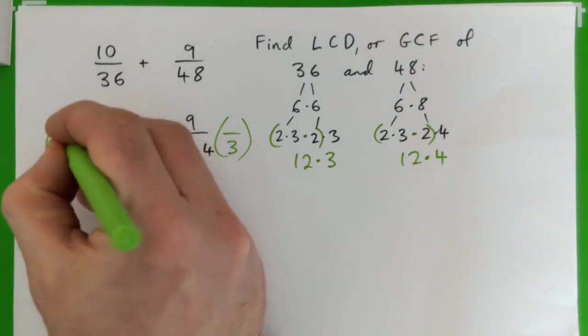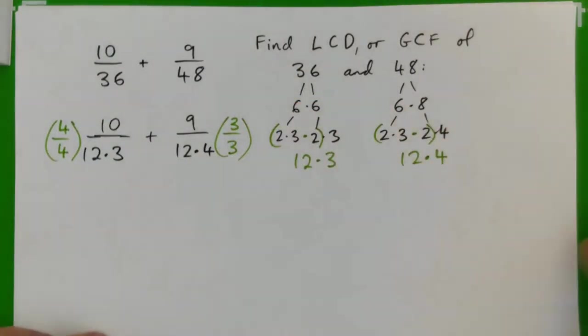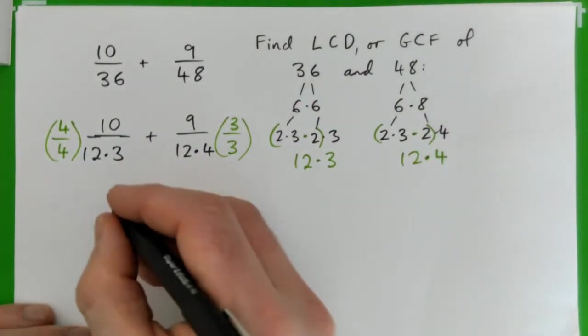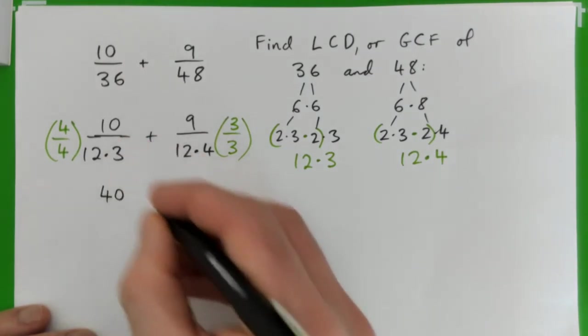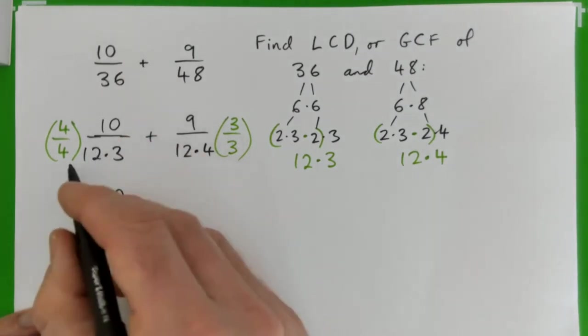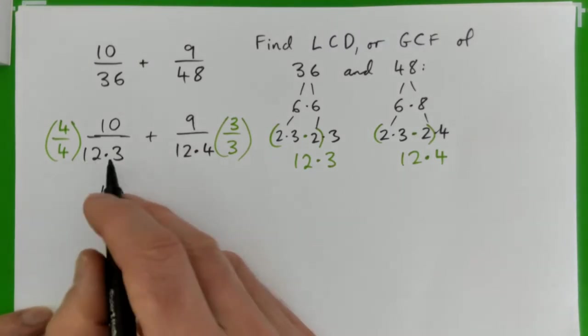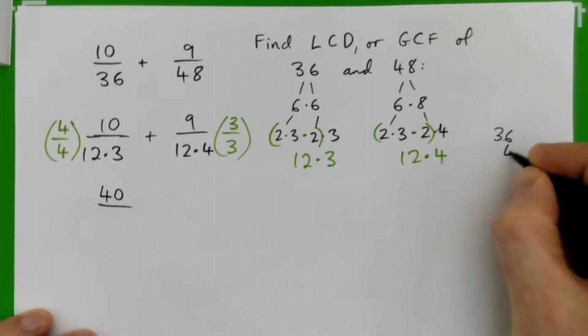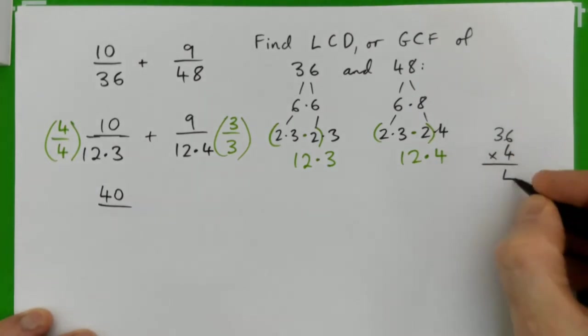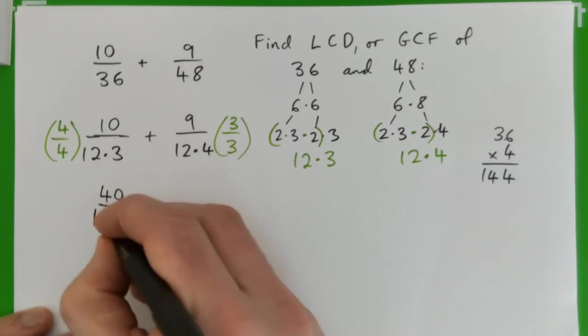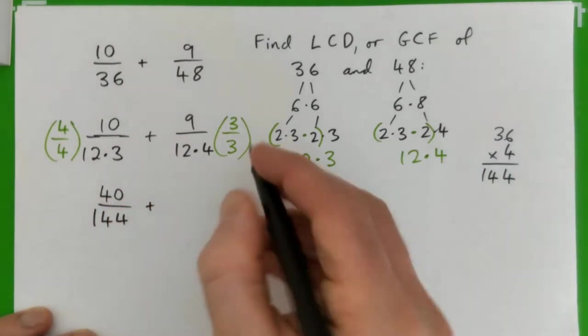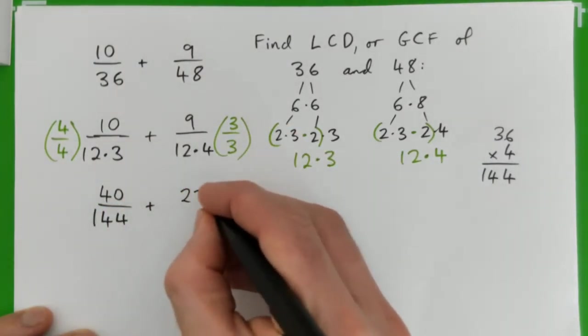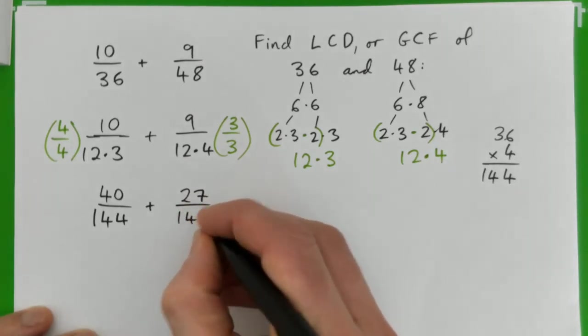So times this one by 4 over 4, and this one by 3 over 3. So that gives you 40, 4 times 10 is 40, over 36 times 4 is 24, carry 2, that's 14. So 40 over 144, plus 9 times 3 is 27 over 144.